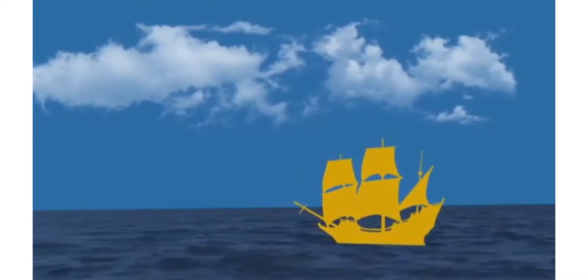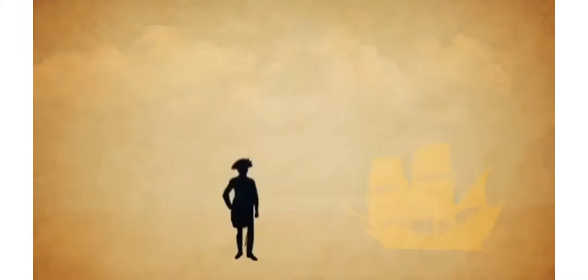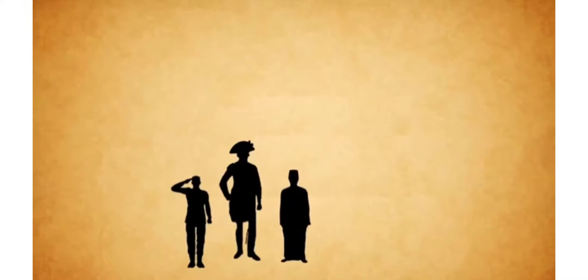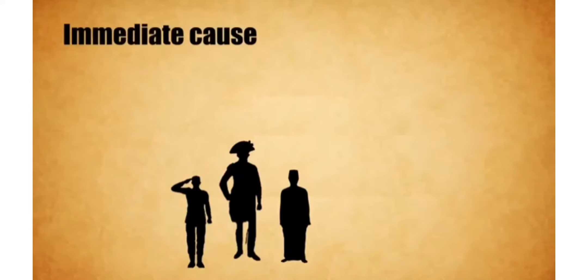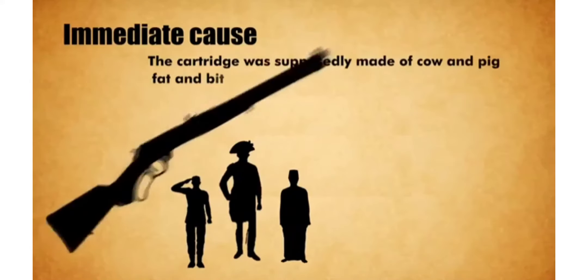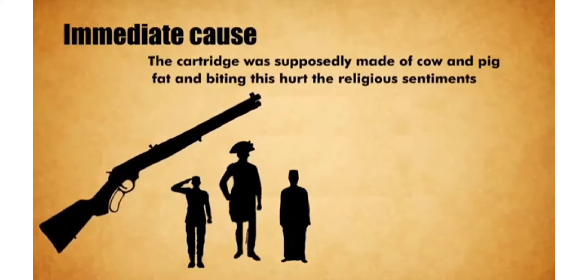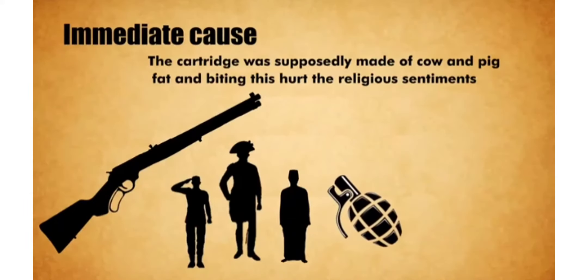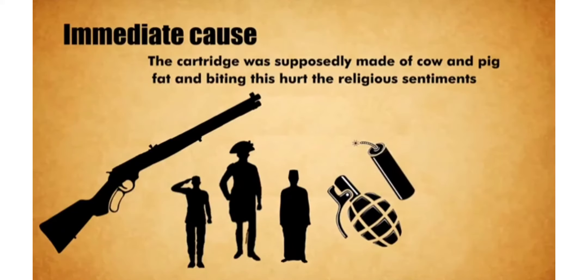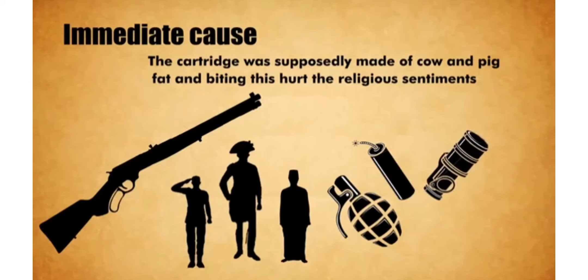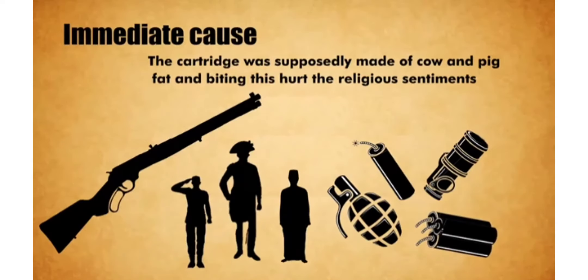Other regions controlled by the company — the presidencies of Bengal, Bombay, and Madras — did not witness the same turbulence as the rest of the country. In Punjab, there were incidents of mutiny in the Ferozpur and Jhelum areas. In September 1858, Rai Ahmed Khan Kharal, the leader of the Kharal tribe, led a rebellion in the Multan Bar district of Punjab.